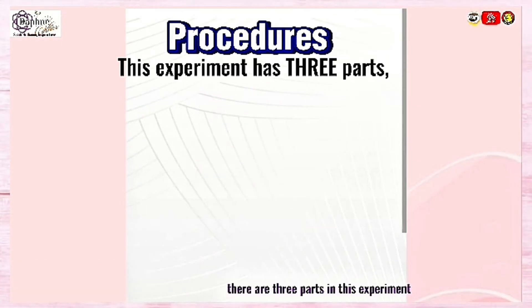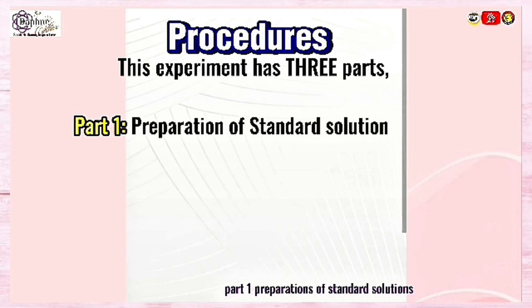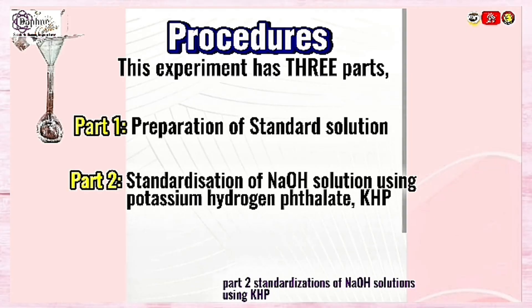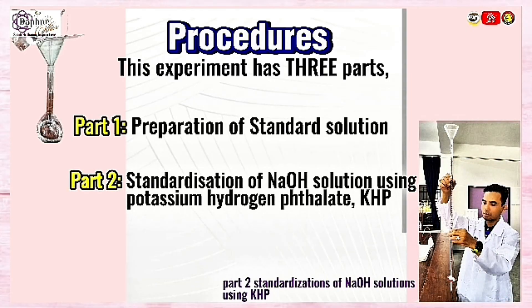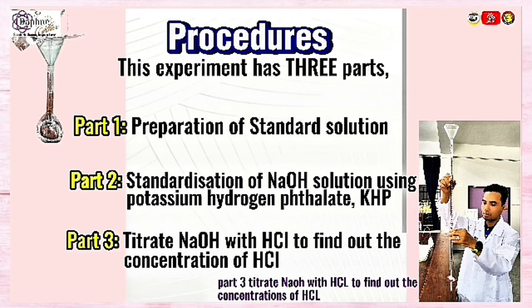There are three parts in this experiment: Part 1 — preparation of standard solutions; Part 2 — standardization of NaOH solution using KHP; Part 3 — titrate NaOH with HCl to find out the concentration of HCl.